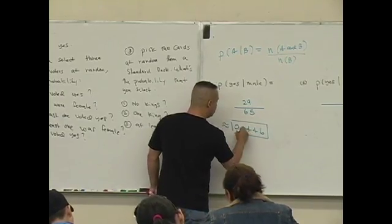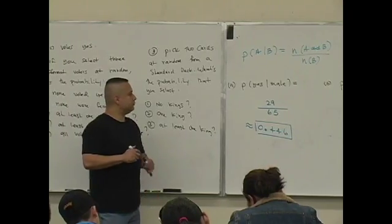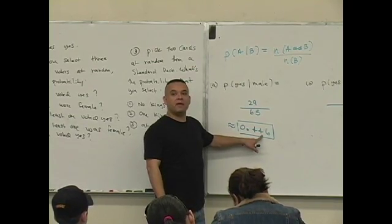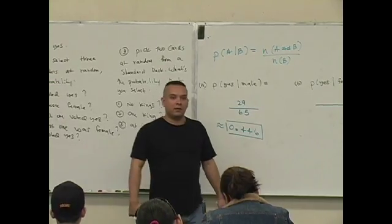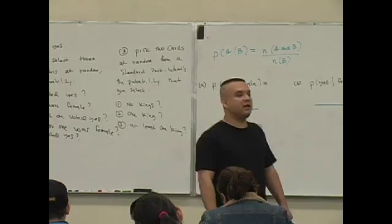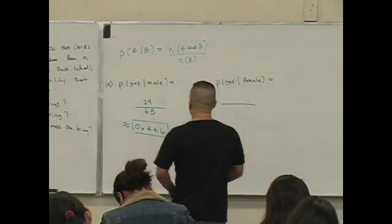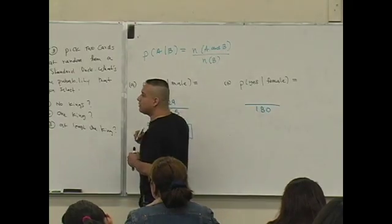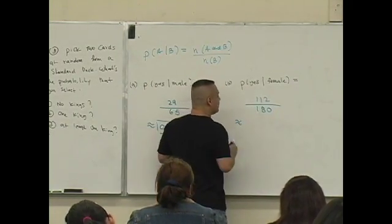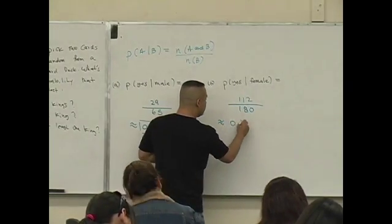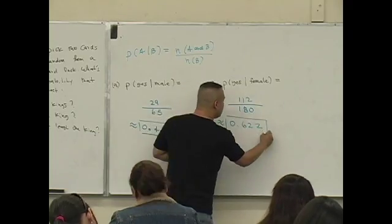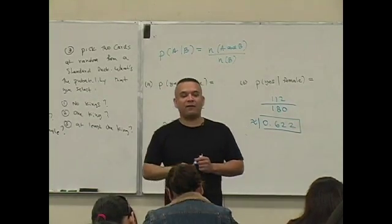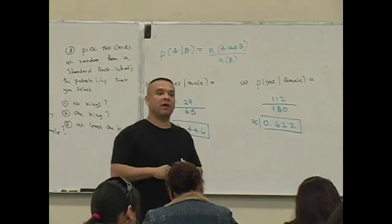0.446. Okay, so what this means is 44.6%, approximately 45% of the men voted yes on the initiative. Compare that to the women. How many women are in the survey? 180. Of the 180 women, how many voted yes? Approximate to the nearest thousandth. 0.622. So approximately 62.2% of women voted yes. So who do you think favored the initiative or favored the candidate? Women favored the candidate or initiative. And why that is?